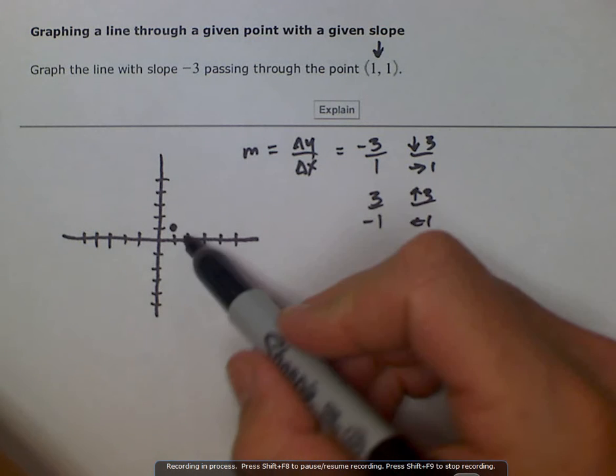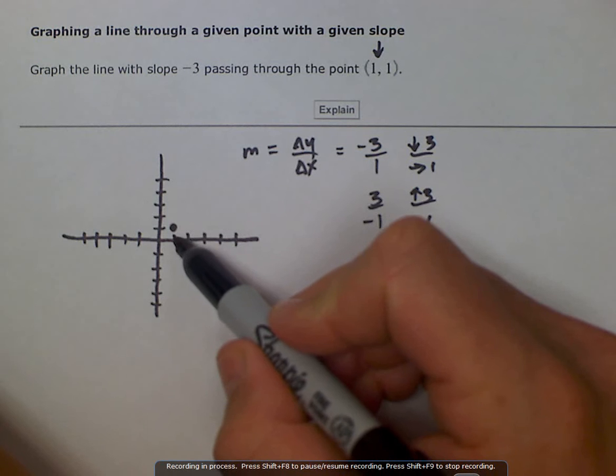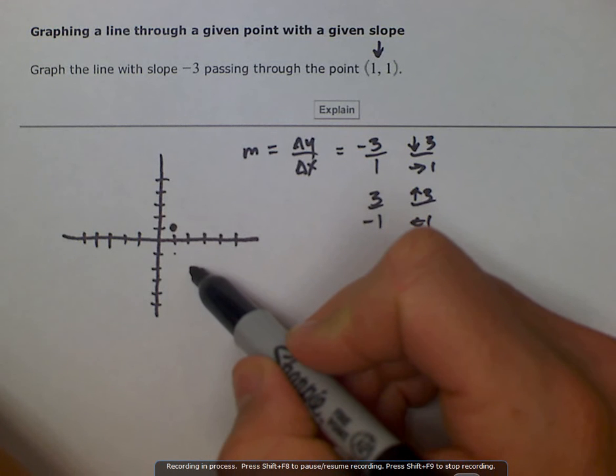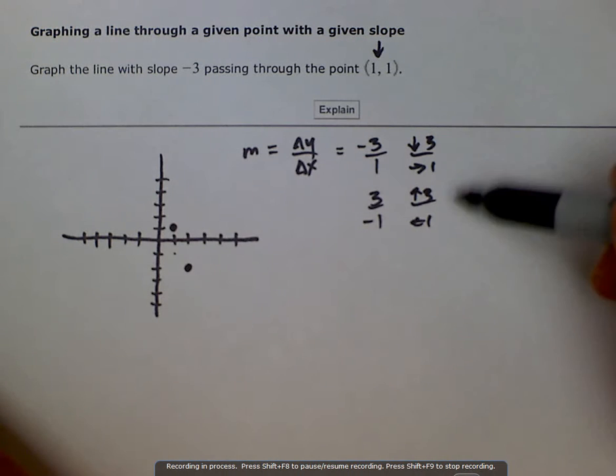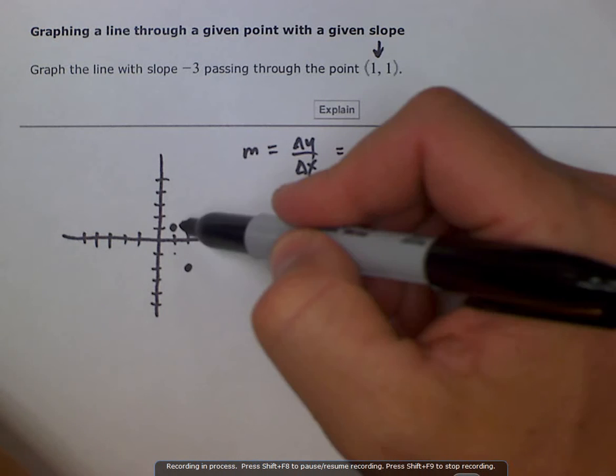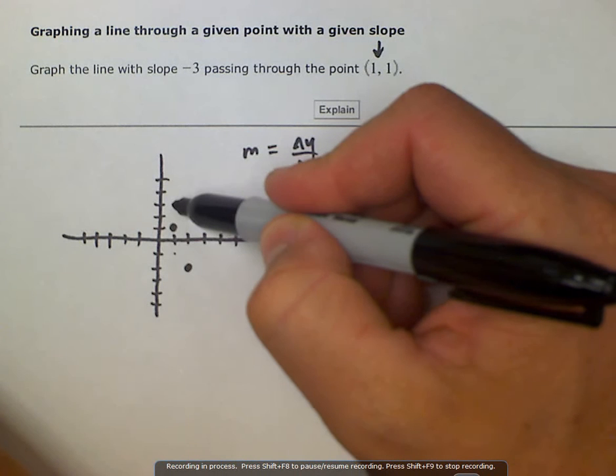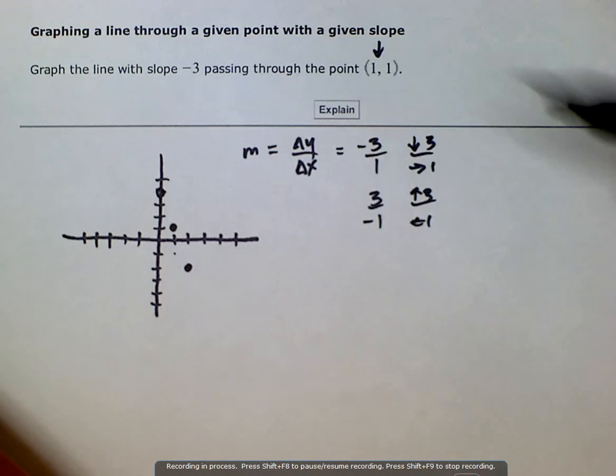So if we go down 3, down 1, 2, 3, and then to the right positive 1, we would be there. And then if we were to go up 3 and back 1, we would go up 1, 2, 3, and back 1, and it just so happens it gives us our y-intercept.